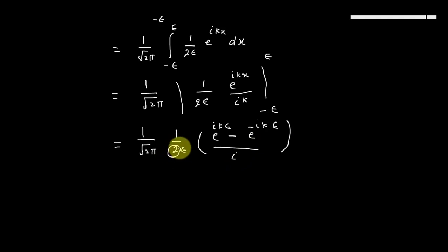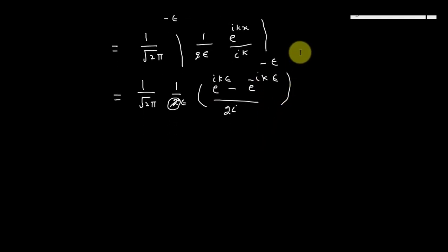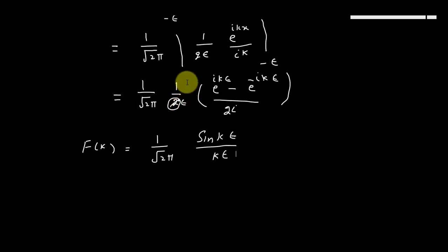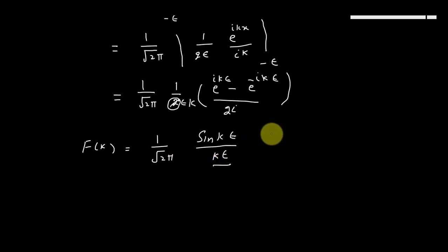تو یہاں پہ 2 اس سے cancel ہو جائے گا، اور یہ term sin(Kε) کے برابر ہے۔ لہٰذا f(k) = 1/√(2π) × sin(Kε) / (Kε). This is the solution of the given function when k ≠ 0.